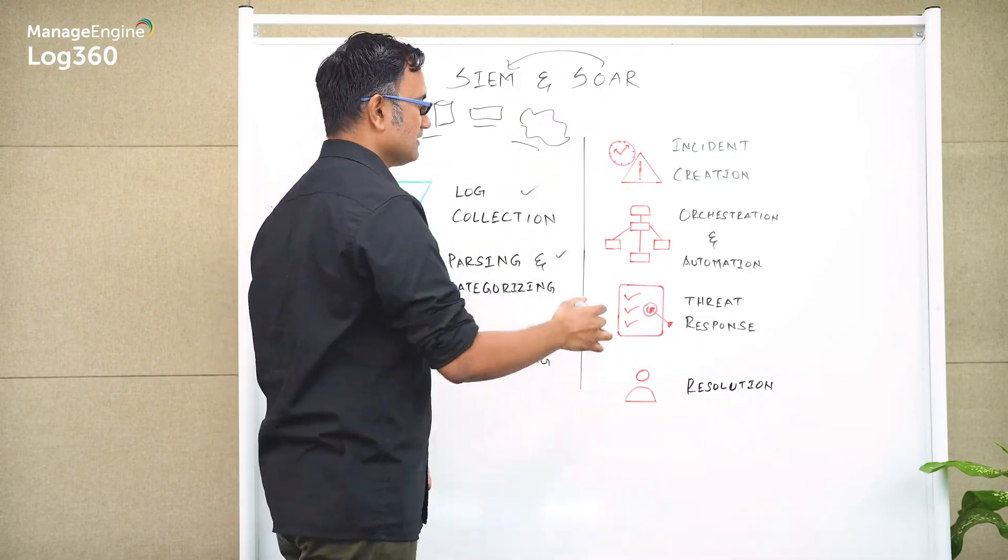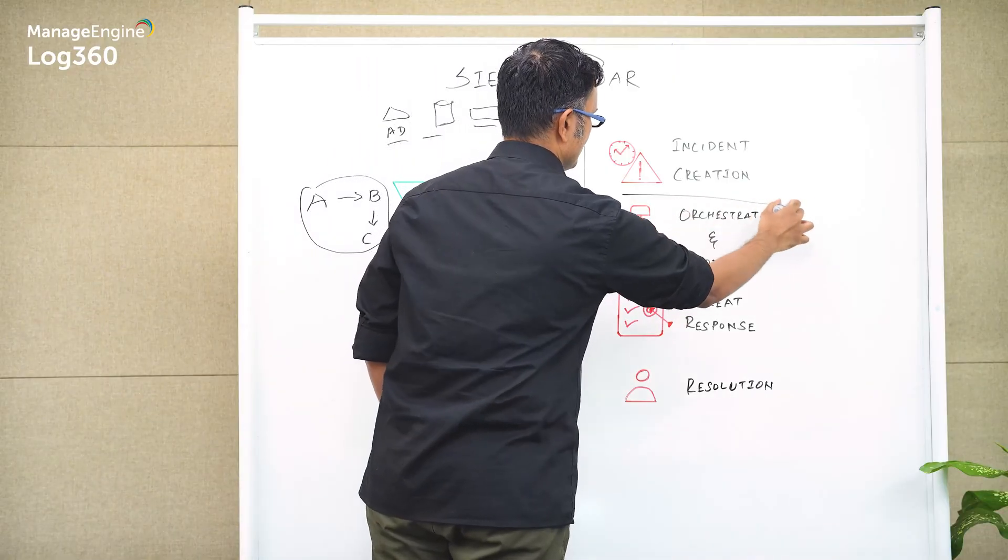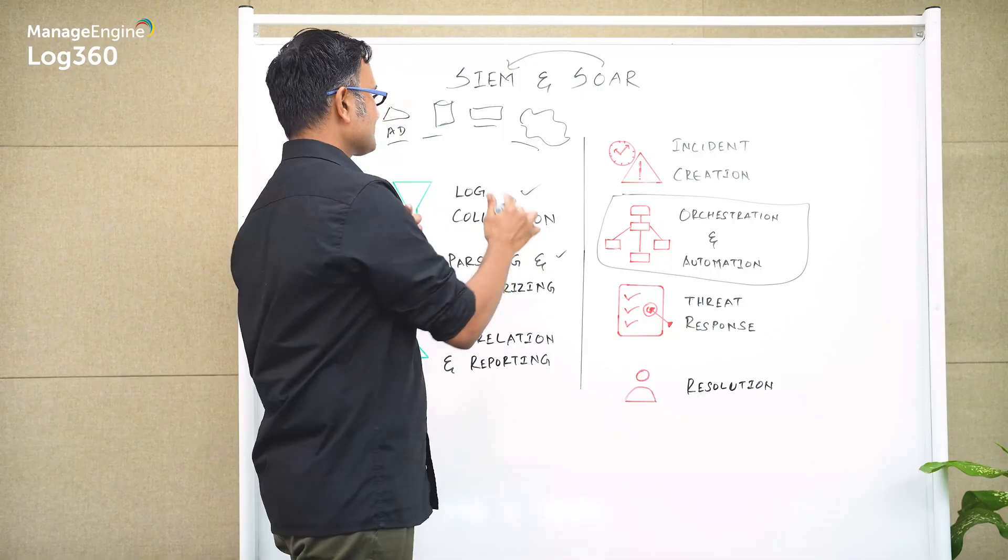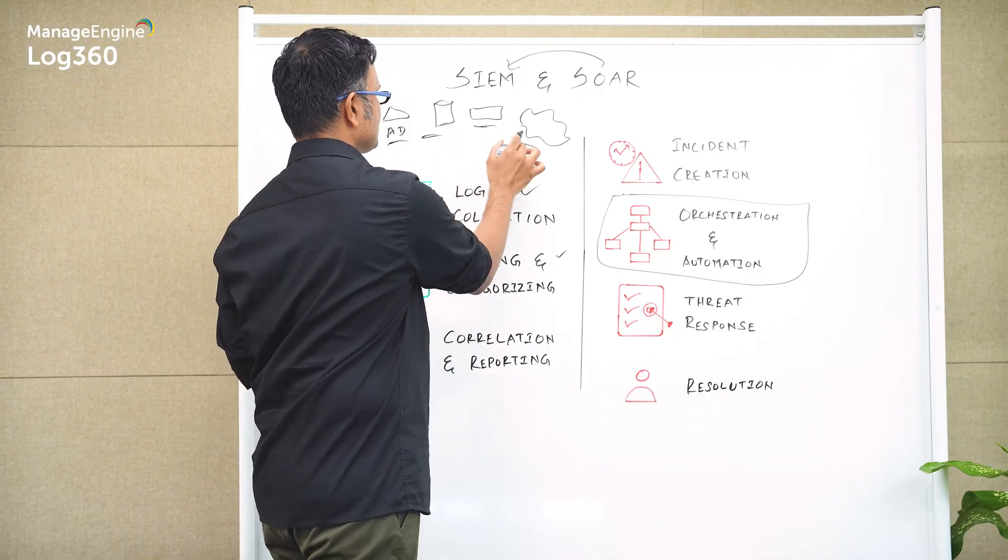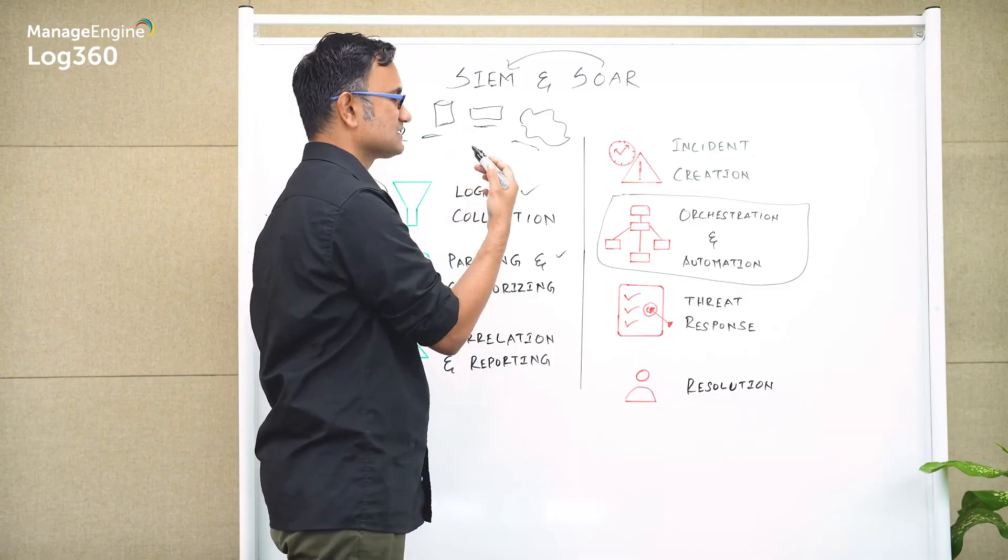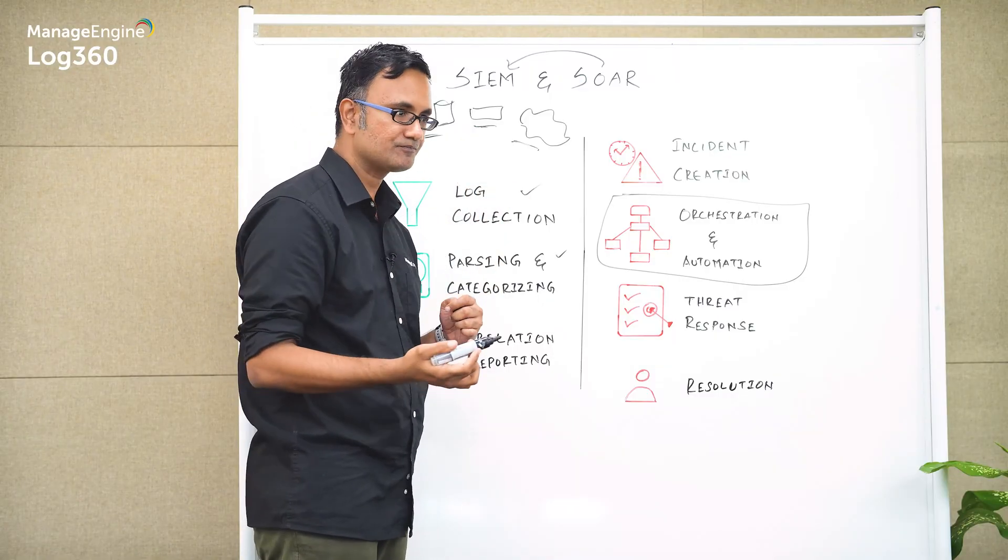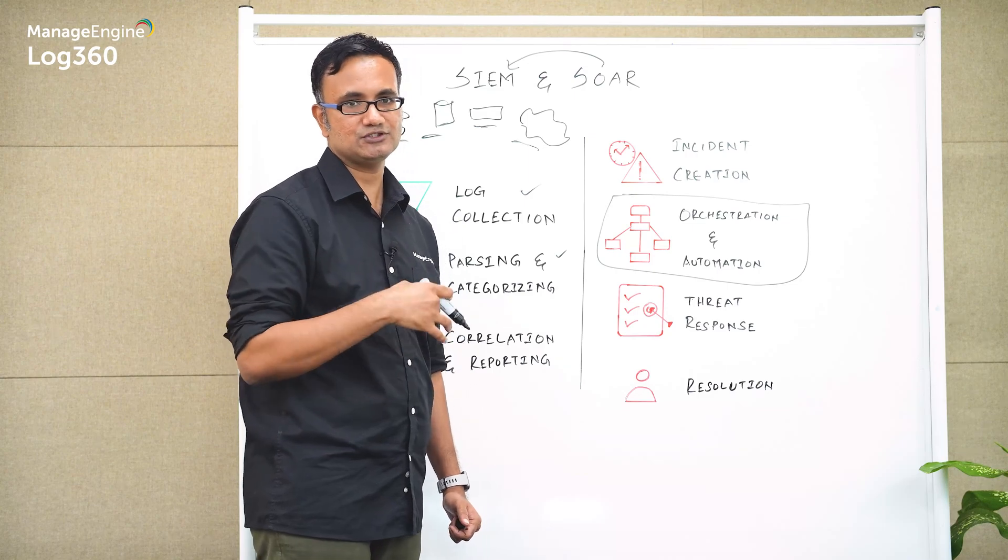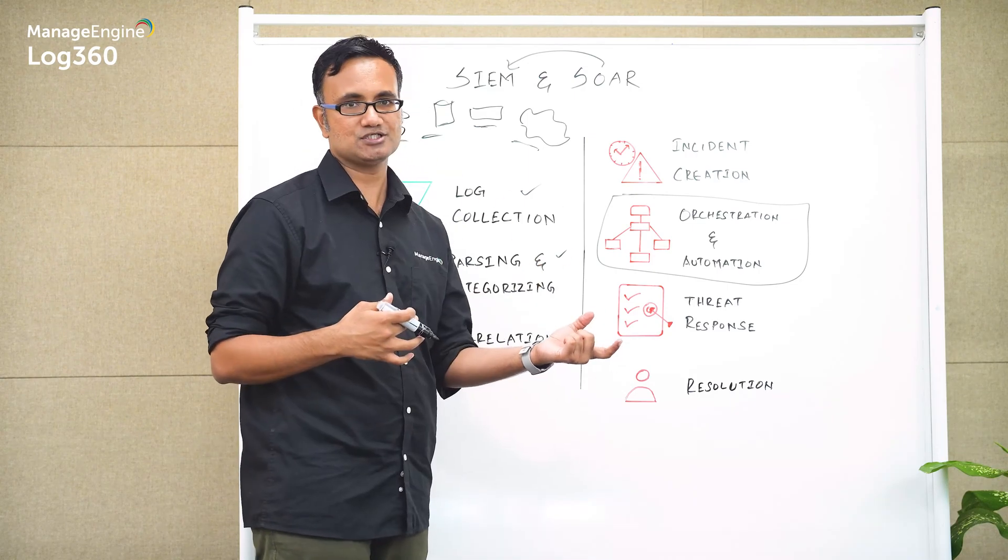But what exactly is SOAR? Well, first off, you'd need orchestration and automation. Like I said earlier, you could have various different components within your network—you could have your AD environment, your databases, file servers, cloud, and so on. But is there a way to automatically discover these devices within your network? Well, that's an automation, and that is also a capability within your SOAR.